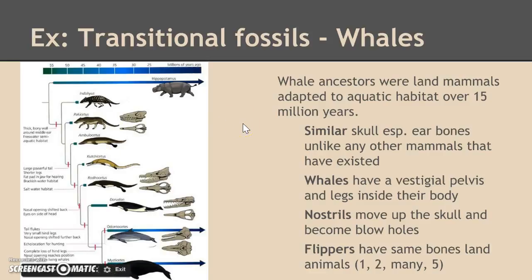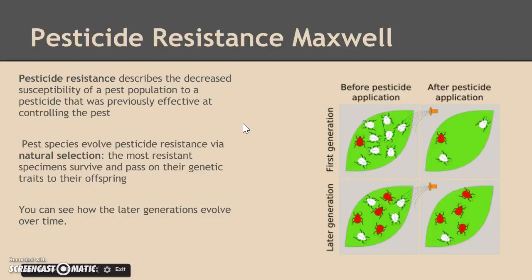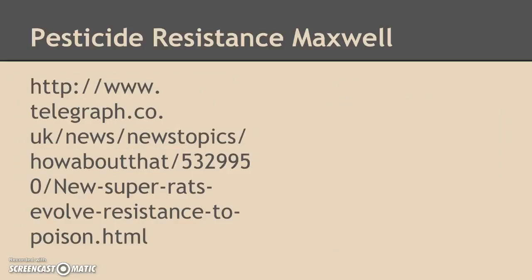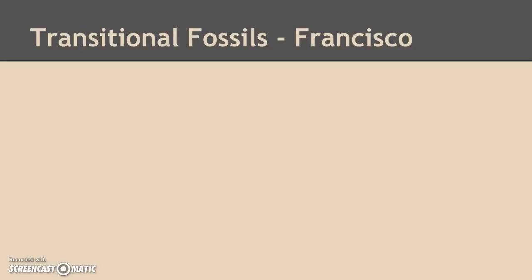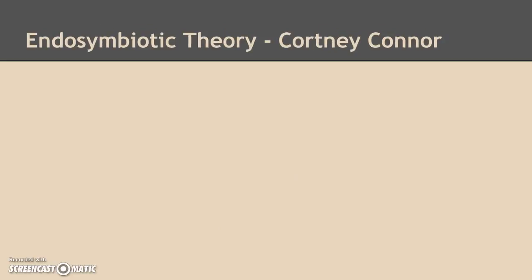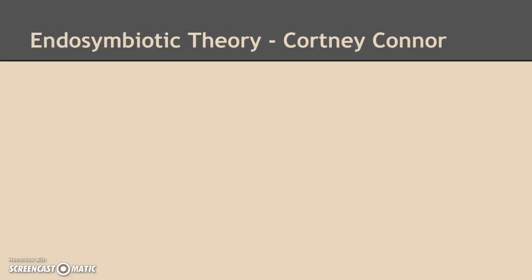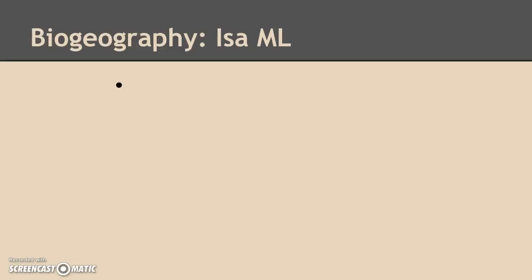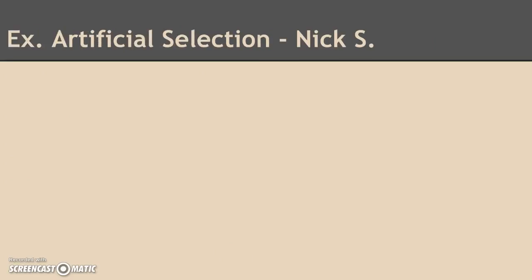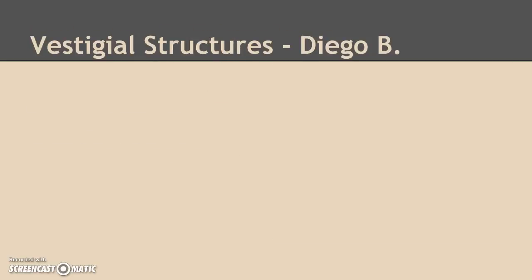So that's my basic example, and each of you has been assigned one. Francisco, you're doing a different example of transitional fossils. Courtney, you're going to be doing endosymbiotic theory. Nick, you're going to be doing artificial selection. Diego, you're going to be doing vestigial structures.